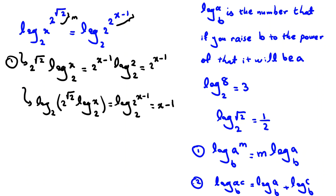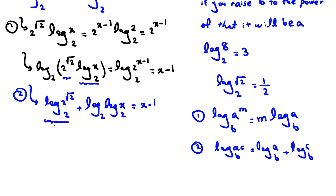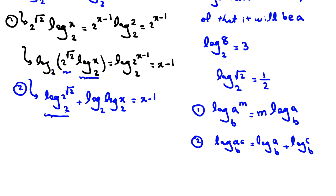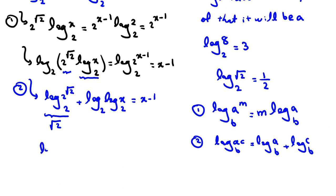For the left side we use rule 2, since it is a product. We get log base 2 of (2·root 2) plus log base 2 of (log x base 2), equal to x minus 1. Log base 2 of 2·root 2 equals root 2 by the famous sentence, since 2 to the power of root 2 is 2·root 2. Moving root 2 to the right: log base 2 of (log x base 2) equals x minus root 2 minus 1.